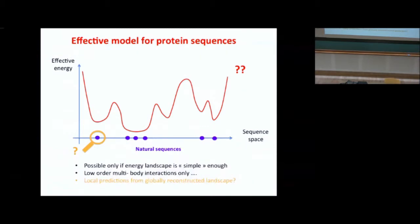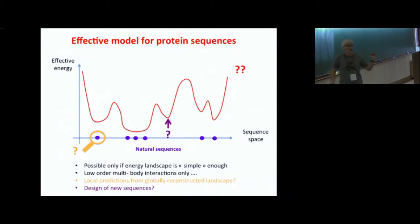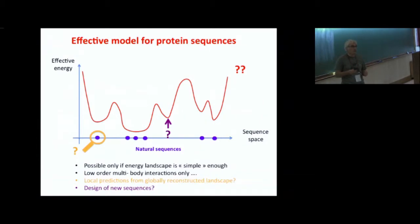Another thing we would like to be able to do is discover new local minima far away from any known natural sequence. Maybe if we generate the corresponding sequence, it's actually a good one — it has the right structure and the right function. Those would be proteins that evolution has never sampled over billions of years, or maybe they were in organisms which have disappeared, but they are still perfectly functional. That's an important capability if you want to do protein design.